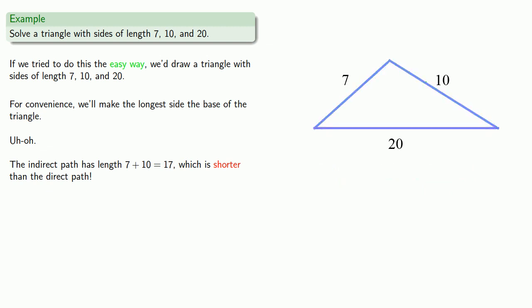And what this means is that a triangle with lengths of 7, 10, and 20 can't exist. And so our solution is that no such triangle can exist.